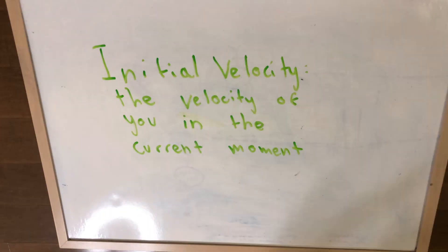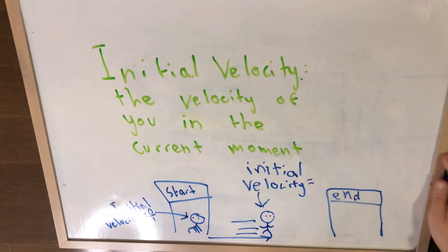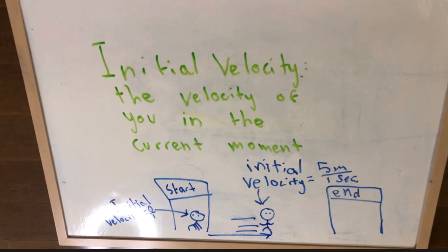There are two types of velocities. The first type of velocity is initial velocity. Initial velocity is the velocity of you in the current moment. Like at the start of the race, your velocity would be 0 meters over 0 seconds.